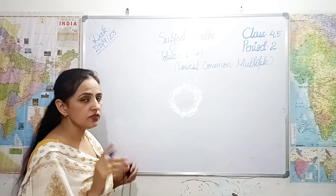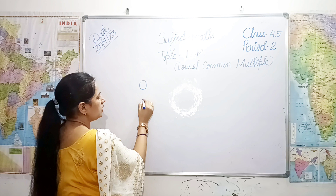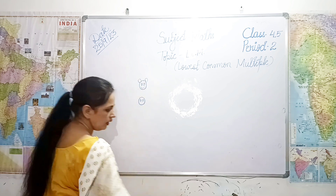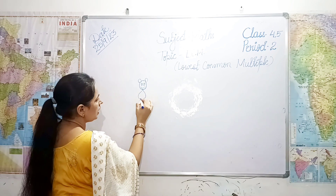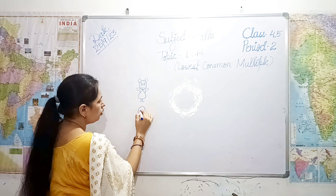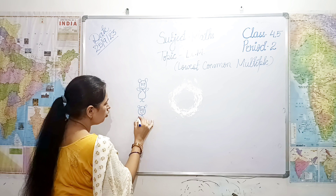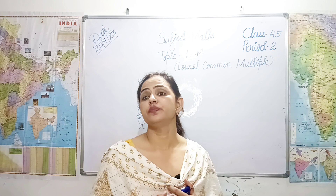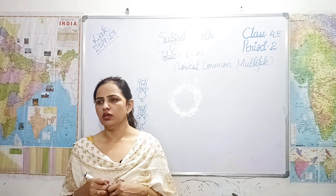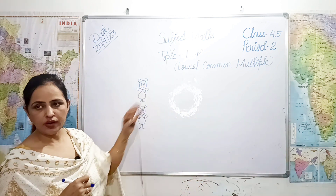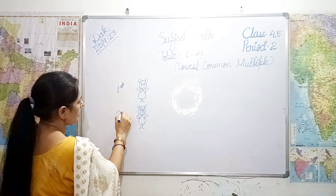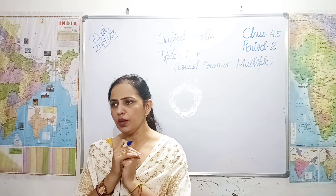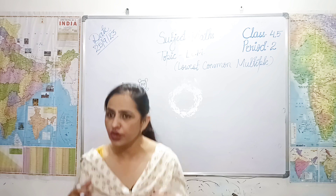Aisi hi ek kawal story hai. There were two rabbits. Listen very carefully. Just imagine that these are two rabbits. Dono mein na race lagti. They decided — let us have a race today and see who will be the winner. So, the first rabbit — one time may woh three jumps karta hai. How many times? Three times.